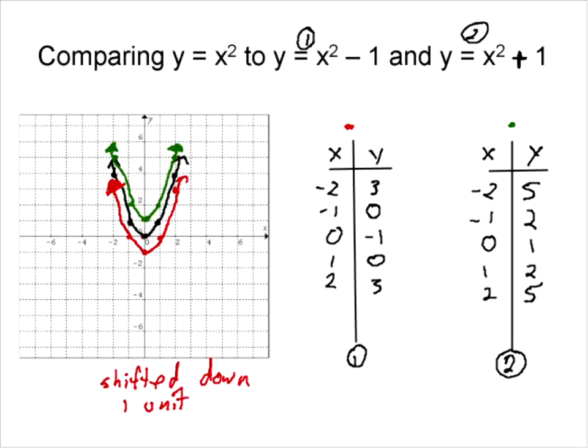And what's happened to the green one? Well of course it hasn't been shifted down, it's been shifted up one unit. So all that does is that vertical shift and moves it up and down.